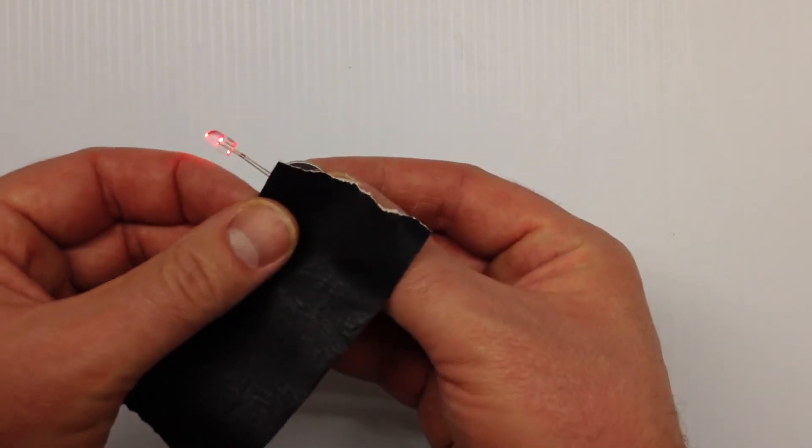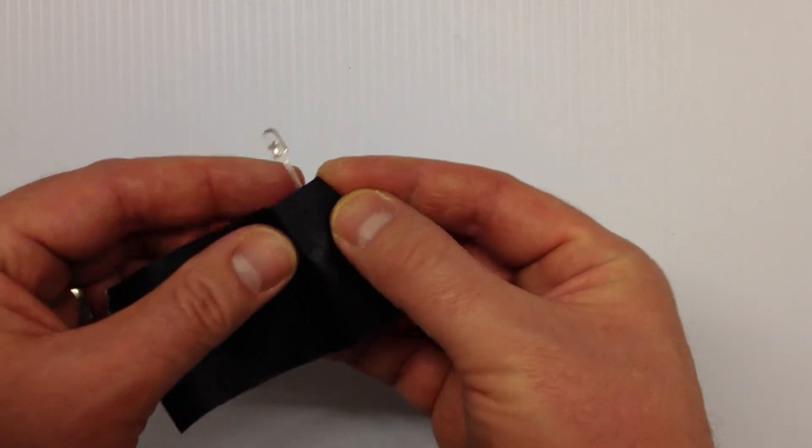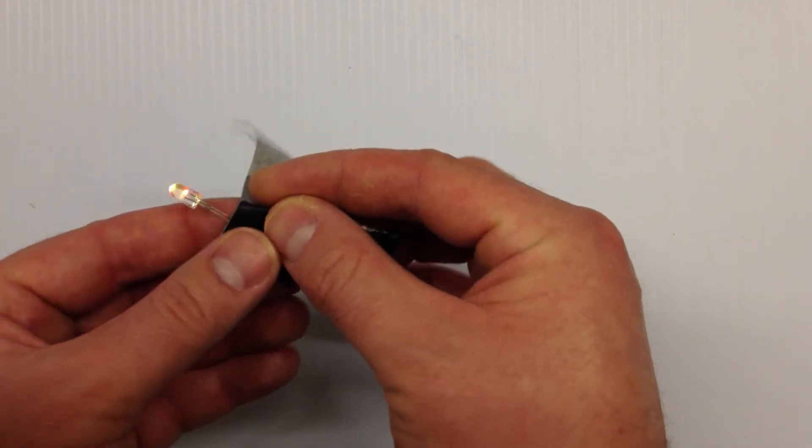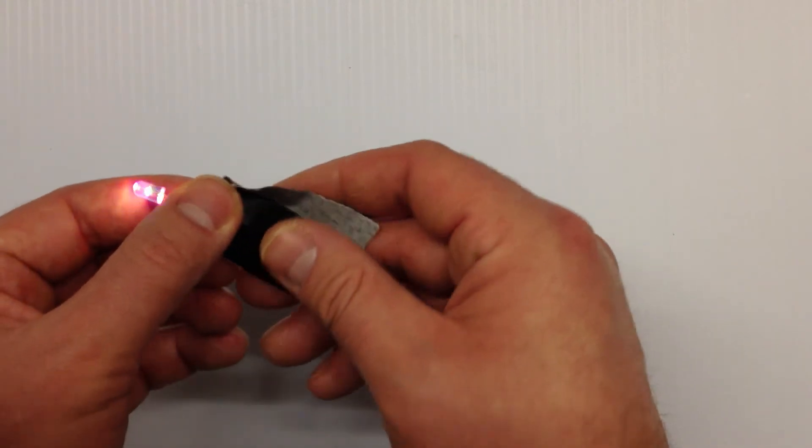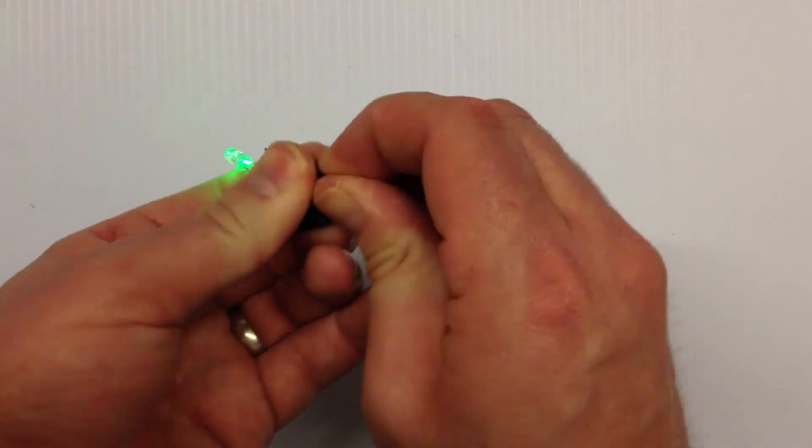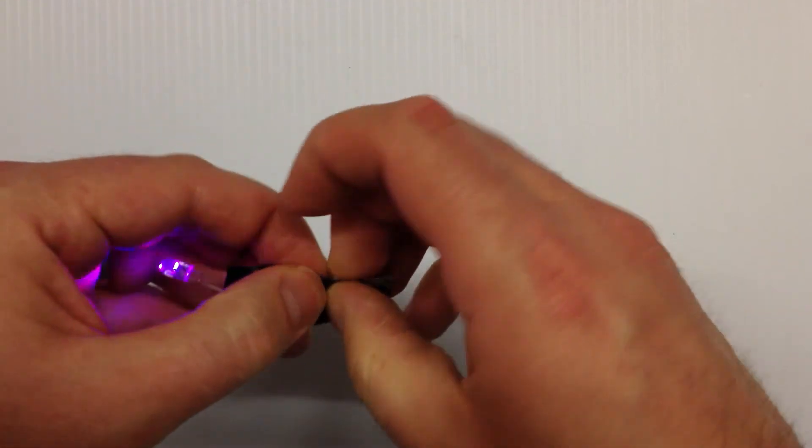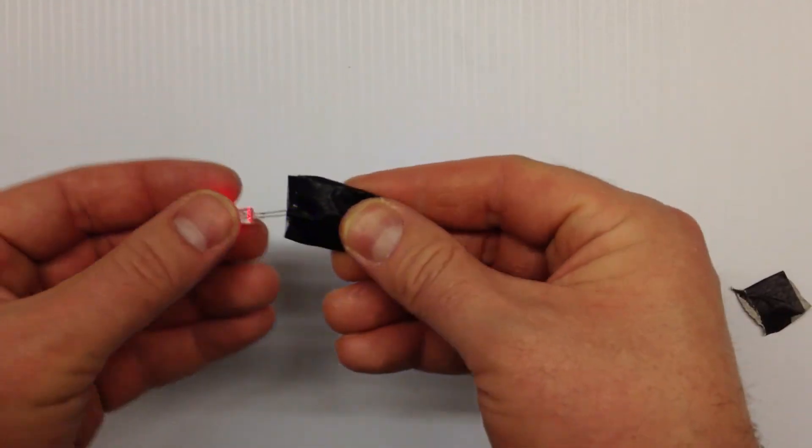Now the only thing that's not included in the kit is the tape. I'm just using black masking tape. And there you go, there's an LED throwy. You can throw it on anything that's a magnetic surface.